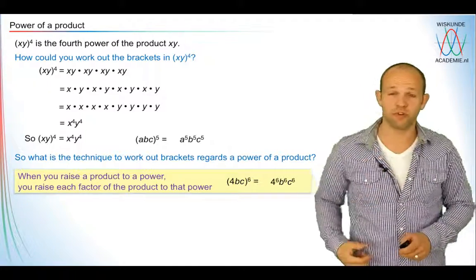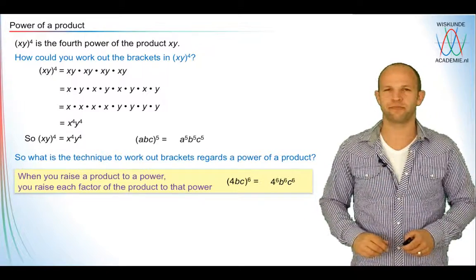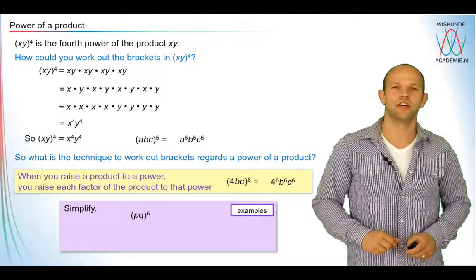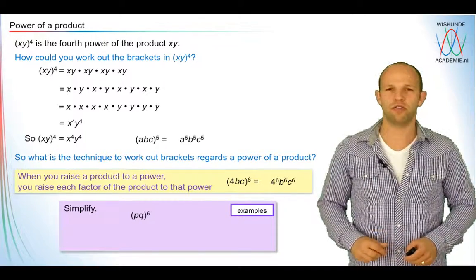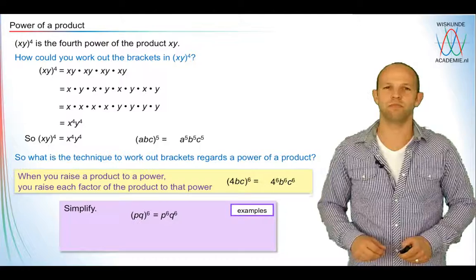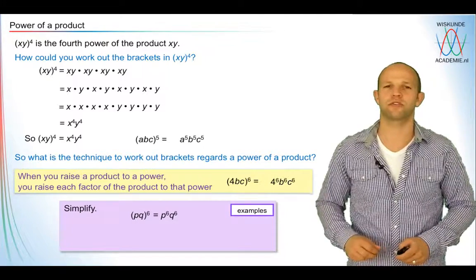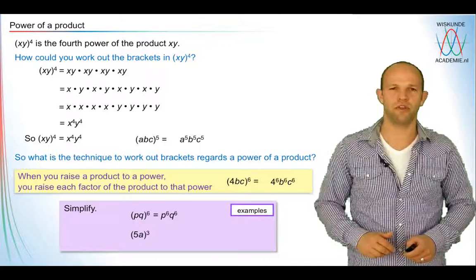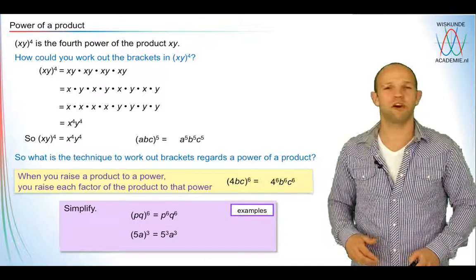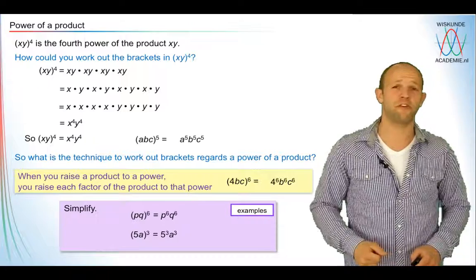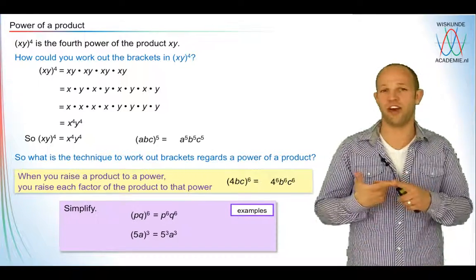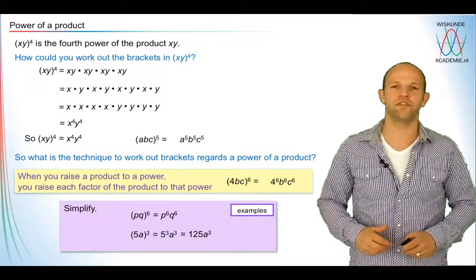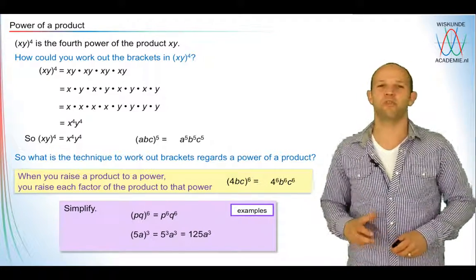Normally you have to do one step more, because 4 to the power six can be calculated. Now two examples. Simplify (pq) to the power six: this gives p to the power six, q to the power six. Second example: (5a) to the power three. This means 5 to the power three times a to the power three. Then 5 to the power three can be calculated: 5 times 5 is 25, and again times 5 is 125. Which gives you 125a to the power three.